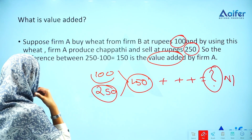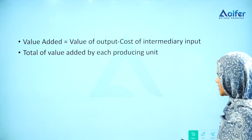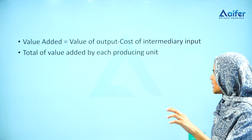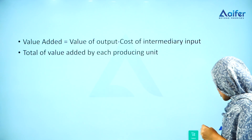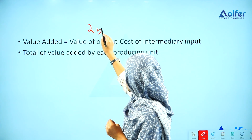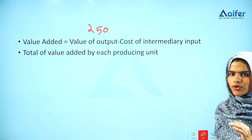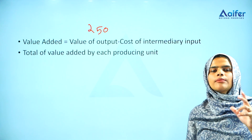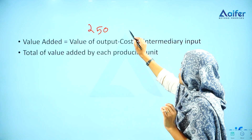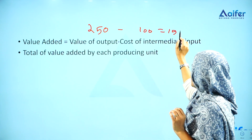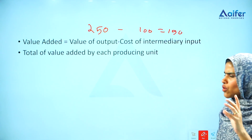Let me explain this with a table. Value added is the value of output. The value of output here is 250 rupees, minus the cost of intermediary input, which is 100 rupees. So the value added is 150 rupees. Value added is simply value of output minus cost of input.